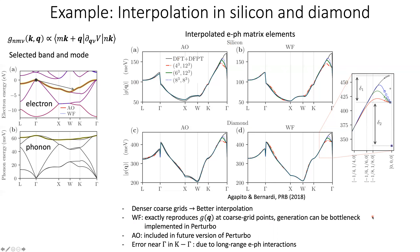One good property of Wannier functions is that they exactly reproduce the g's at coarse grid points. However, the generation of Wannier functions can often be a bottleneck. Interpolation using Wannier functions is currently implemented in Perturbo and included in the released version. For atomic orbitals, a great advantage is that we don't need to generate them as they are mostly predetermined, and we have plans to include atomic orbital interpolation in a future version of Perturbo.